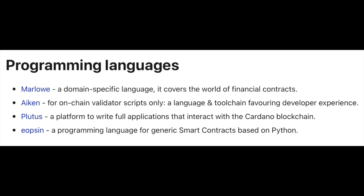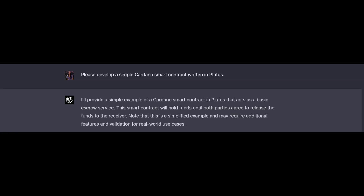Right now, Cardano smart contracts can be programmed in several different languages. That includes Marlowe, Aiken, Plutus, and Eopsin. Eopsin is based on Python, and I want to use that in the future, but for now I decided to go with Plutus.